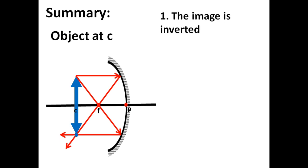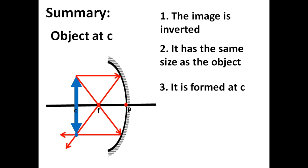1. The image is inverted. 2. It has the same size as the object. 3. It is formed at C. 4. It is real. Great.